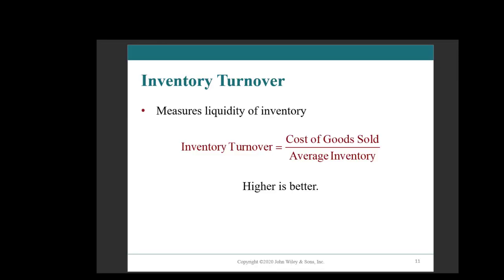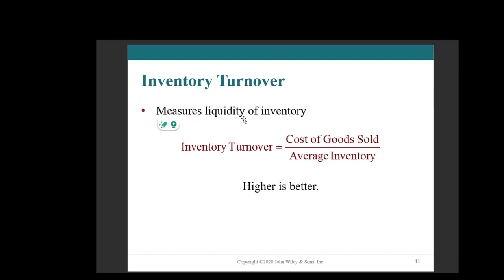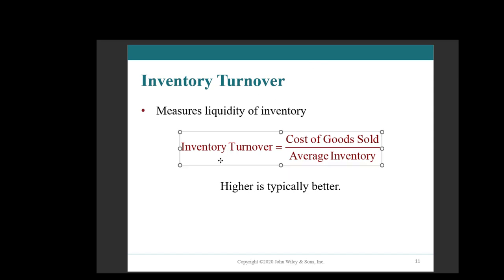Now let's look at inventory turnover. This shows us how quickly we can turn inventory into cash — the liquidity of inventory. Similar to accounts receivable turnover, we look at one income statement item and one balance sheet item. Here we start with cost of goods sold divided by average inventory — last year's inventory balance plus this year's, divided by two. In general, higher is better because it means what's on your inventory shelves is turning over quicker. However, higher isn't always better — for example, if you never have any inventory on hand and you're missing out on sales.